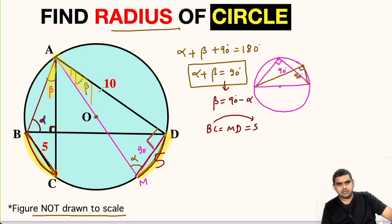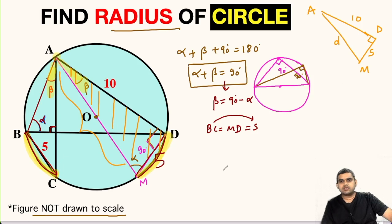Now let us focus on this triangle AMD. Let me draw it separately. This is D, this point is M, this is A. Here AD is 10 units, MD we found as 5 units, and this AM is the diameter. So this can be written as small d. We can use Pythagorean theorem here. So diameter squared will be equal to 10 squared plus 5 squared. This will be 100 plus 25, that is 125. So d will be square root of 125, that is 5 root 5 units.